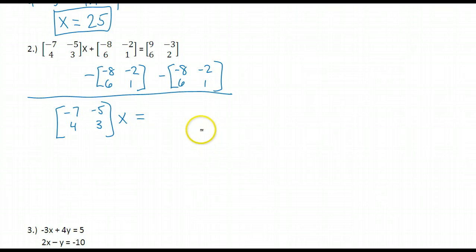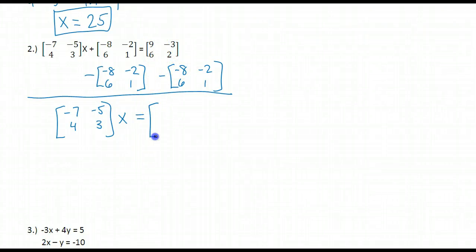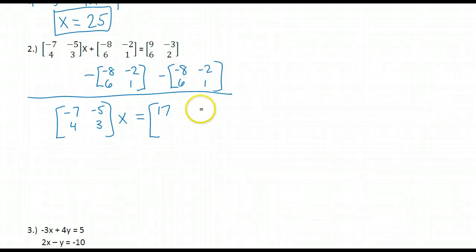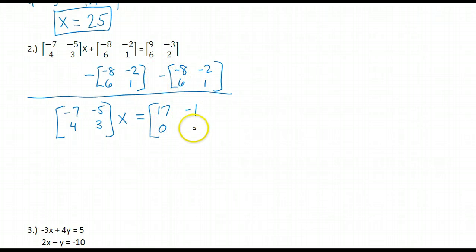On the right side of the equation, I need to do this math — subtract corresponding entries. 9 minus negative 8 is 9 plus 8. Negative 3 minus negative 2 is negative 3 plus 2. 6 minus 6 is 0, and 2 minus 1 is 1.